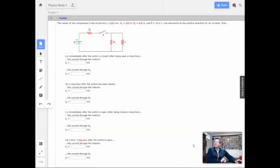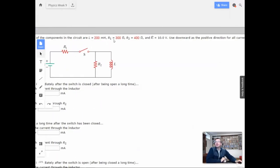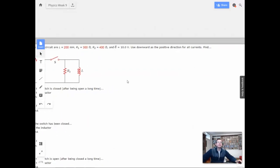Week 9, problem 7. The values of the components in the circuit are L equals 200 millihenries, resistance equals 300 ohms, resistance 2 equals 400 ohms, epsilon is 10 volts, use downward as a positive direction for all currents.